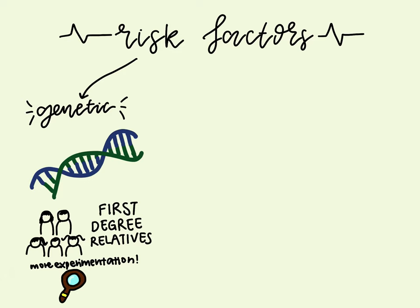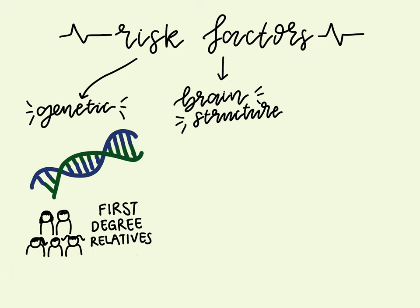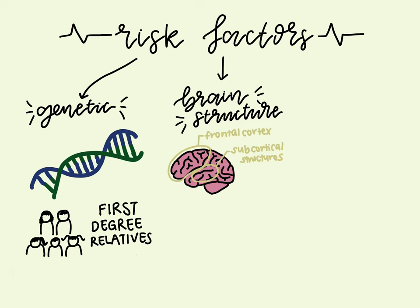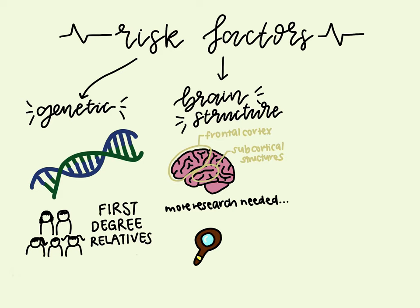Secondly, the next cause is due to brain structure. Studies have shown that patients with OCD have differences in their frontal cortex and subcortical structures. It has been shown that there is a relationship between abnormalities of certain parts of the brain and symptoms of OCD. However, more research needs to be conducted to clearly show this relationship, which could allow for more effective diagnosis as well as more specialized treatments for OCD.